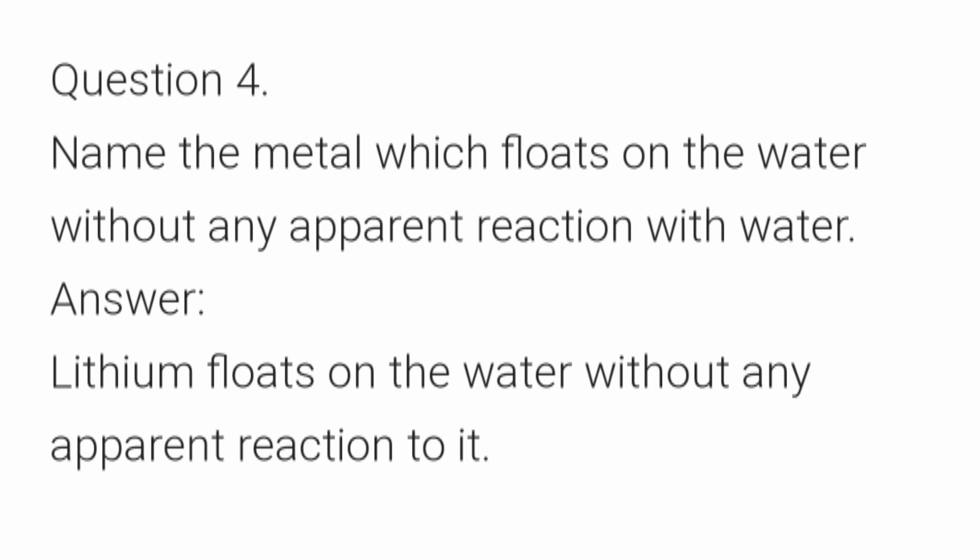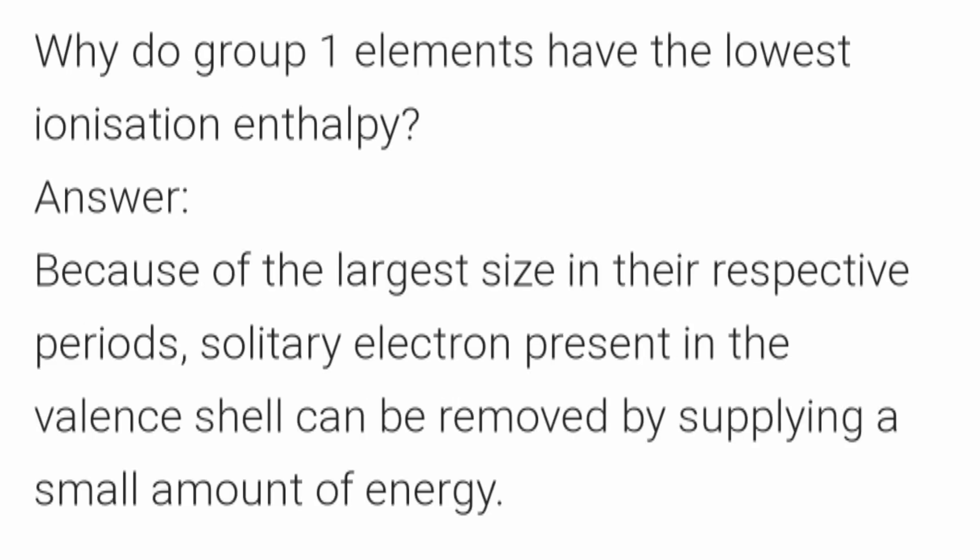Why do Group 1 elements have the lowest ionization enthalpy? The answer: because of the largest size in their respective periods, the solitary electron present in the valence shell can be removed by supplying a small amount of energy.